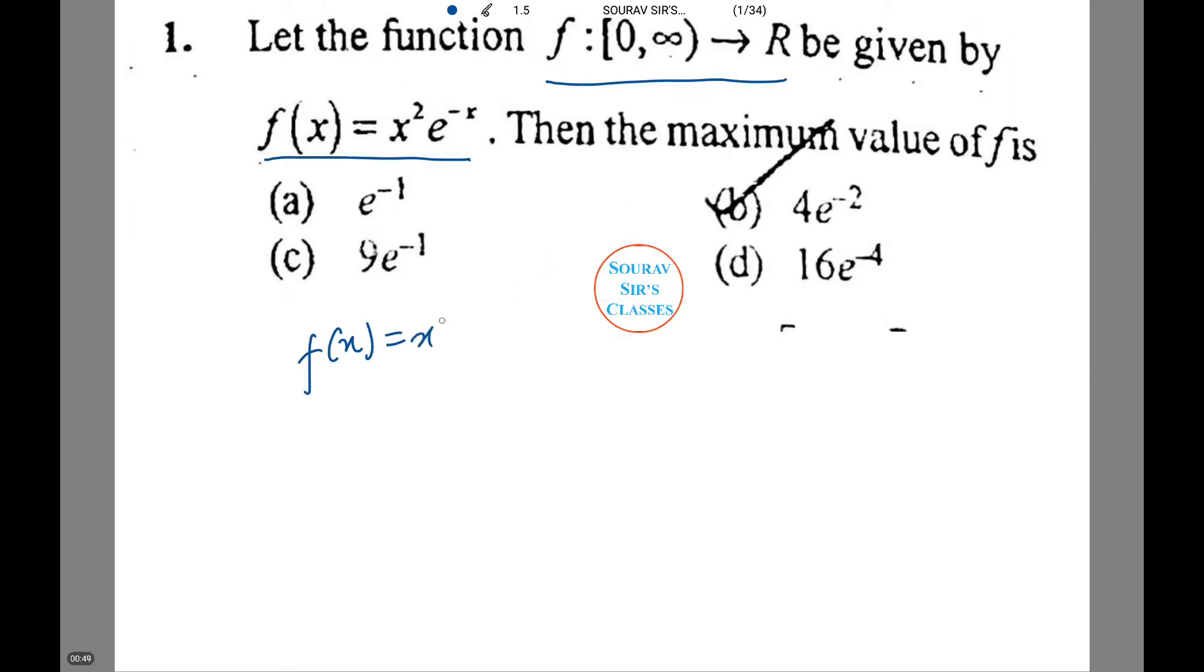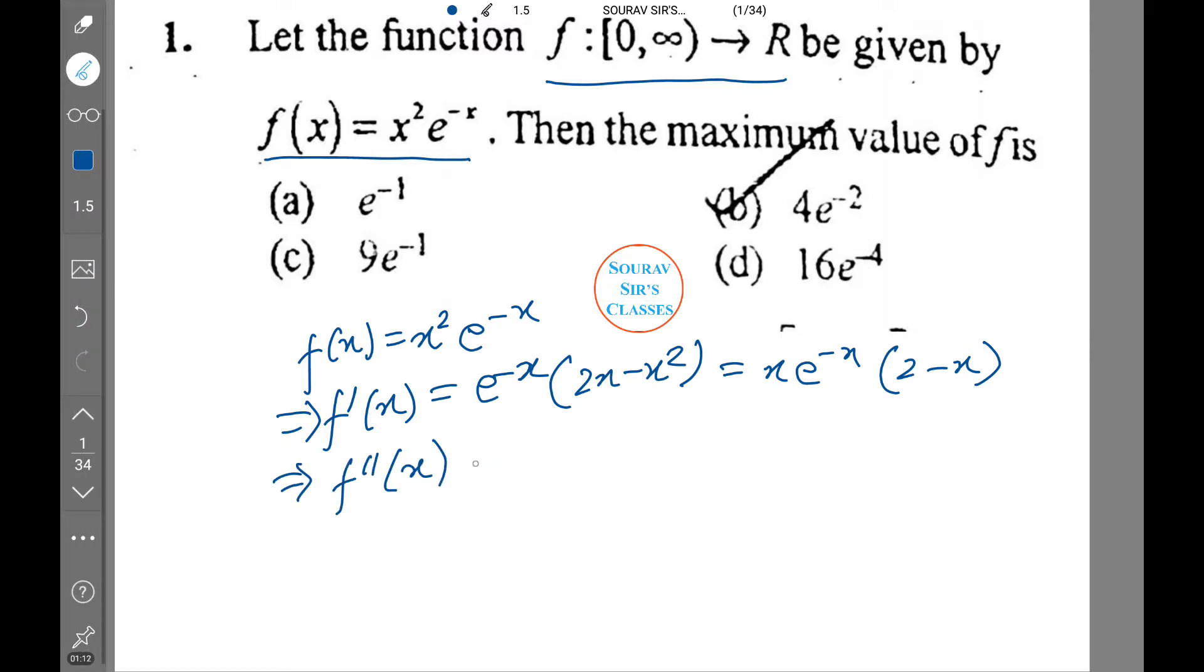f(x) equals x square e to power minus x. Now f dash x equals e to power minus x into 2x minus x square, which equals x e to power minus x times 2 minus x. Now f double dash x equals e to power minus x into minus 2x plus x square plus 2 minus 2x.